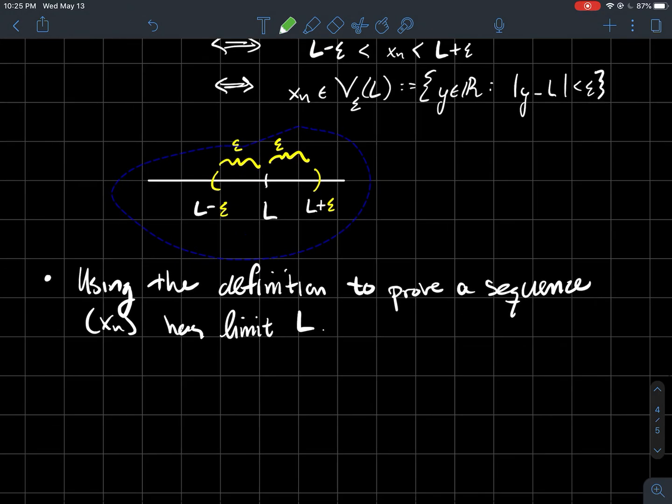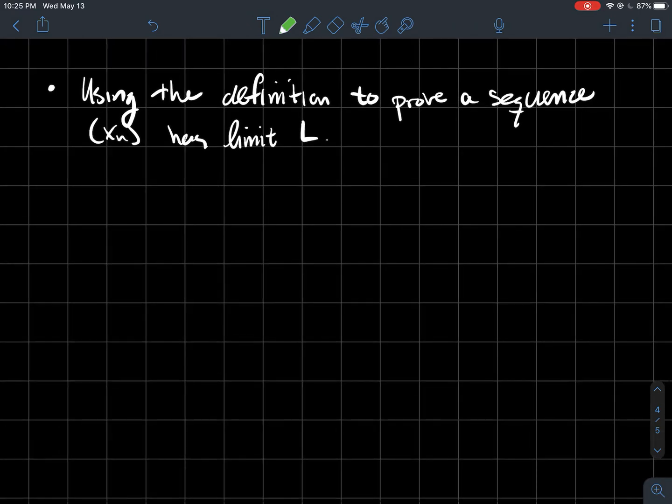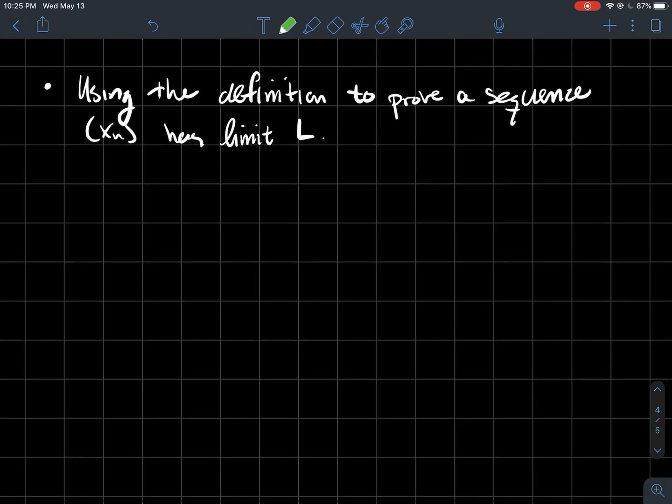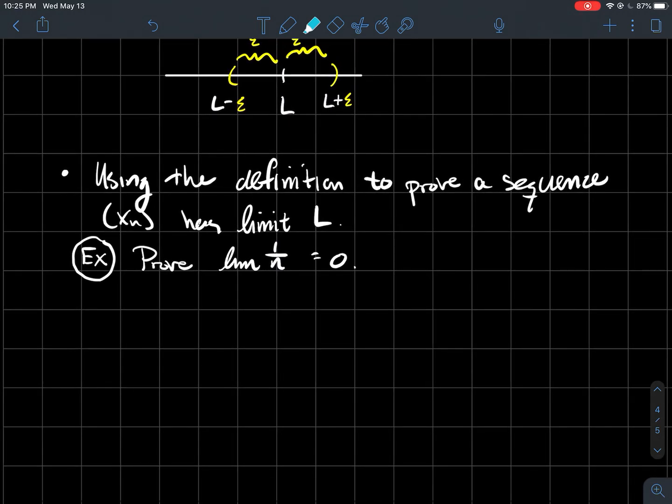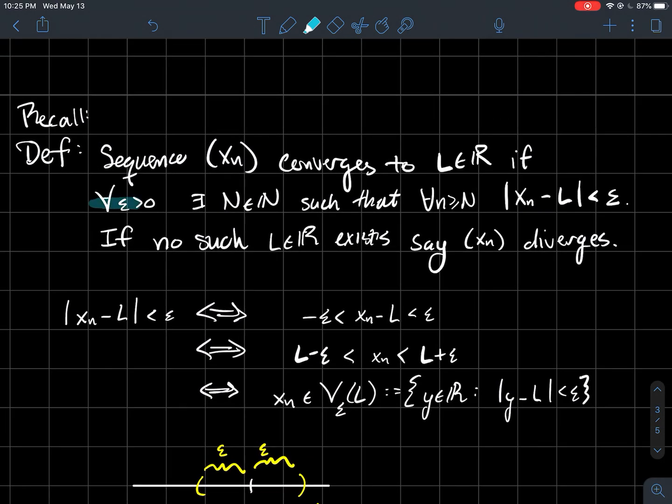Now let's focus on how to use that definition to prove a sequence x_n has limit L. Prove that the limit of 1/n equals 0. By the way, we usually omit writing n goes to infinity because it's understood for sequences.